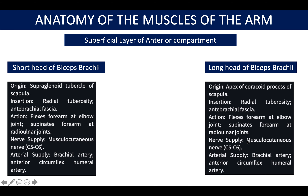The long head of biceps brachii originates from the coracoid process of the scapula, inserts into the radial tuberosity, and the action is again flexion. Nerve supply includes the musculocutaneous nerve, and the arterial supply comes from the brachial artery and anterior circumflex humeral artery.